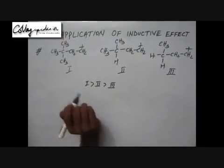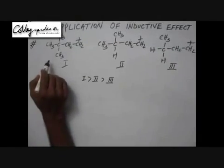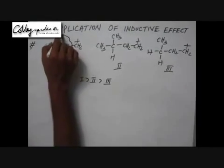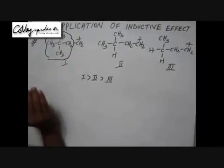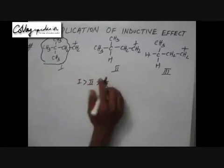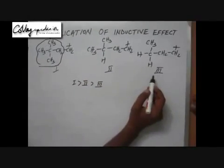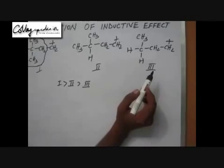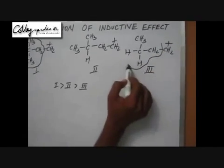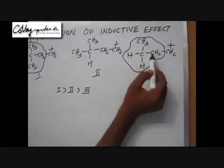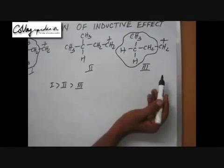The reason for this is the +I effect of the bulky alkyl group is highest in the first case, after that in the second case, and least in the third case, as the alkyl group is least bulky because it has the fewest carbons in the third case.